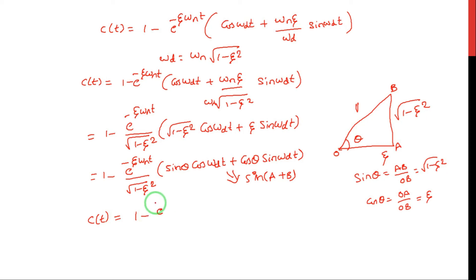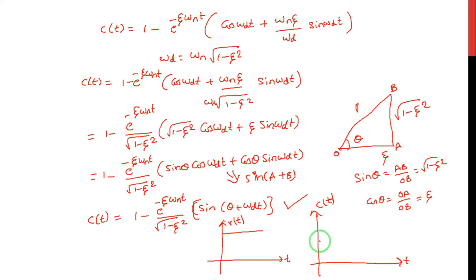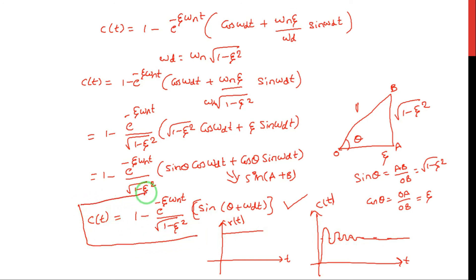This gives the final equation: c(t) = 1 − [e^(−ζωnt) / √(1 − ζ²)] × sin(ωdt + θ). For a unit step input r(t), the output response graph shows a sudden increase, then oscillations with decreasing peaks, eventually settling at a steady-state value of 1. This is the characteristic behavior of an underdamped second order system. This completes the derivation of the step response of an underdamped second order system.